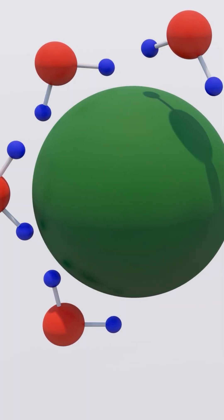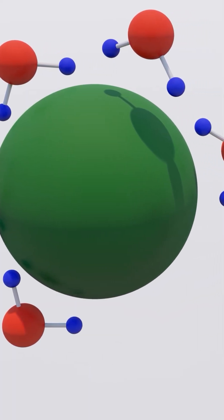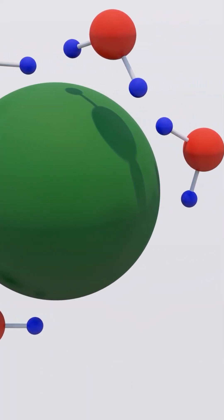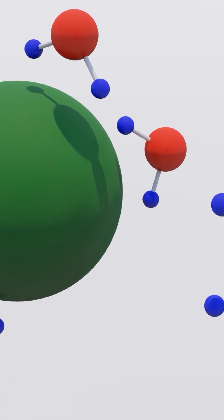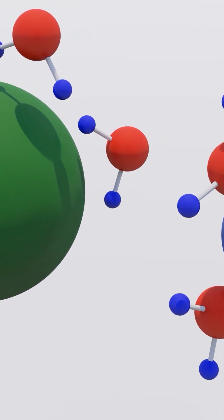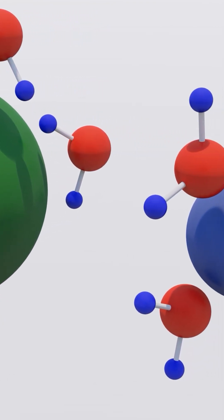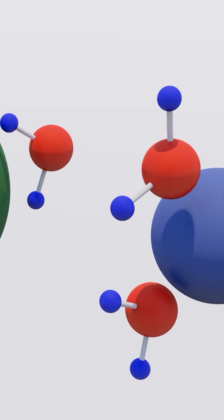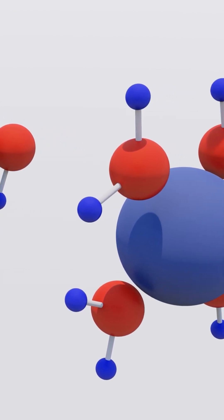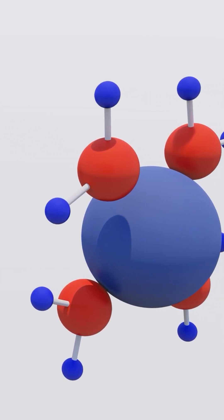The water molecules surround and separate the ions from each other, keeping them apart. As a result, the solid salt crystal dissolves in water. If enough salt is added, the water molecules will reach a point where they cannot attract or dissolve any additional salt. This is known as the saturation point.